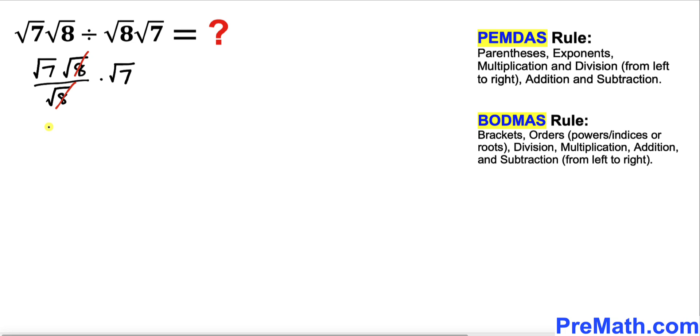So we are ended up with the square root of 7 times square root of 7, and now we know that the square root of 7 times square root of 7 is simply equal to 7.